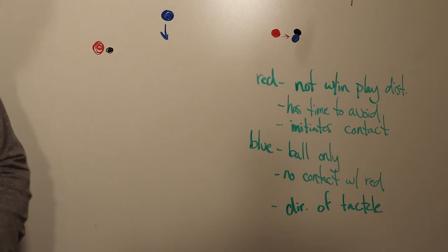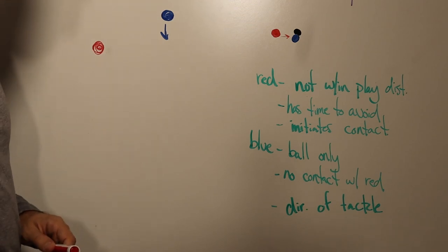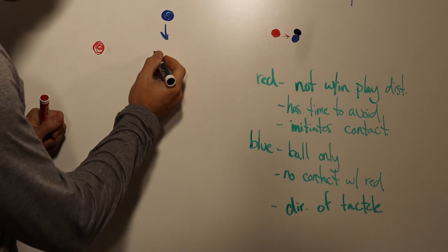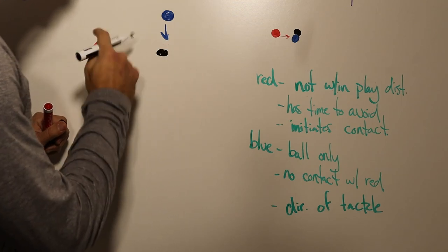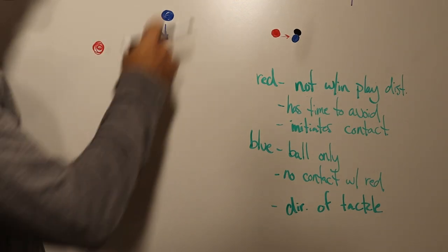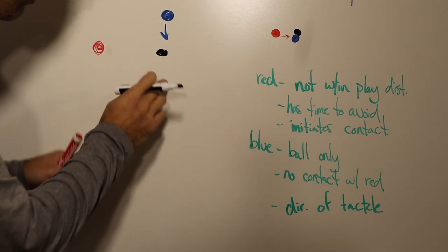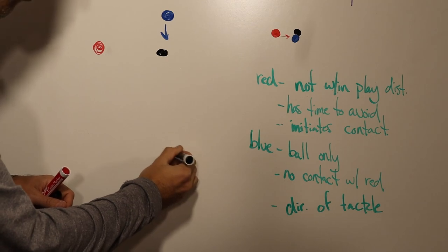Then let's say red has a bad touch and red ends up kicking the ball out here where it's not within playing distance. Red can't reach out and grab it. And then blue comes in and slide tackles and ends up booting the ball way over here.